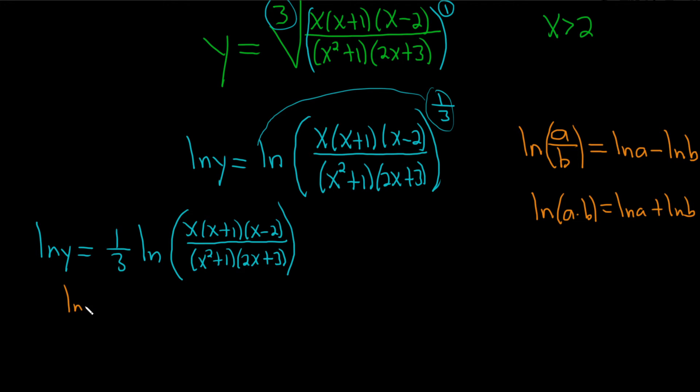So this is the natural log of y equals 1 over 3. So first we'll use the quotient rule. I'm going to use a bracket here. So we have the natural log of the top piece. So x, x plus 1, x minus 2, and then minus the natural log of the bottom piece. So that'll be x squared plus 1, 2x plus 3, and then a bracket. You can add an extra parentheses here if you like, if you feel like it makes it more clear. I did it here. It's not necessary. So it's up to you.